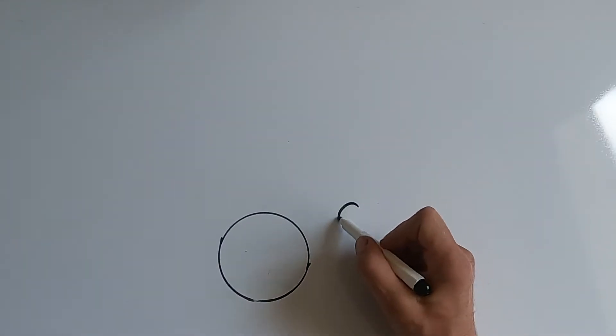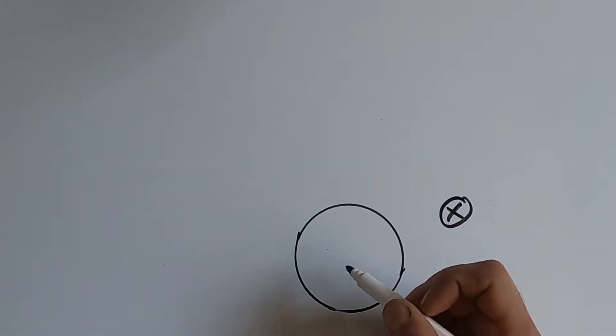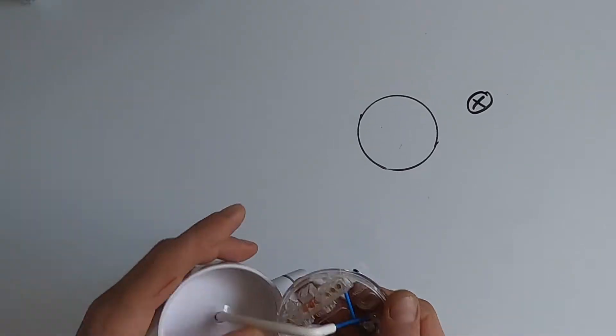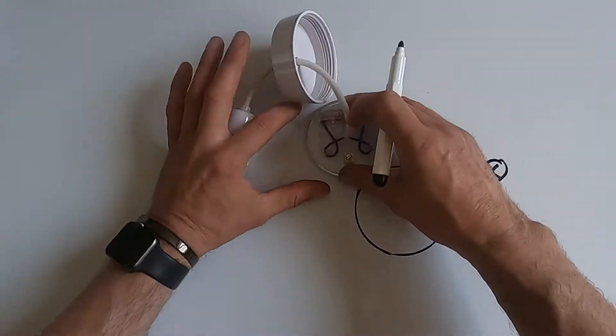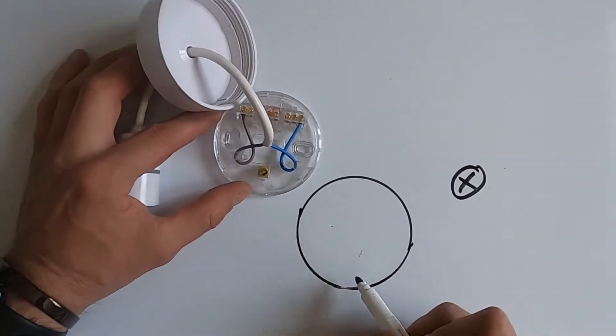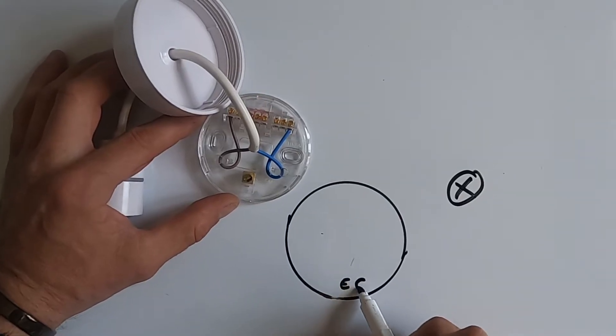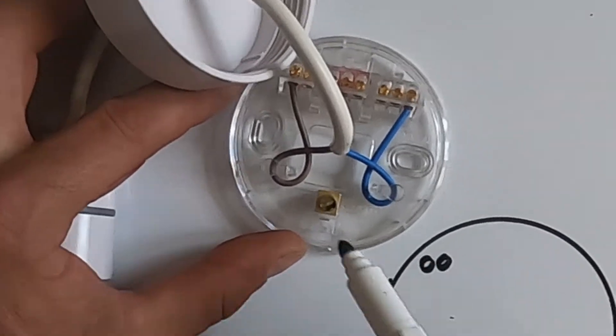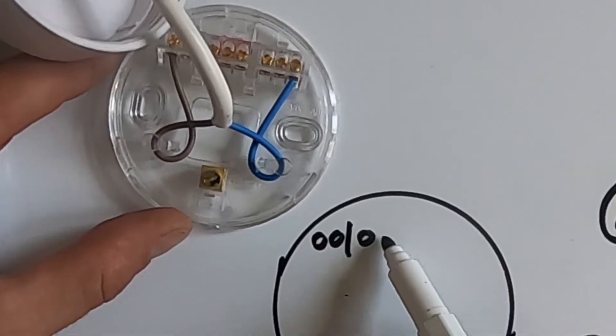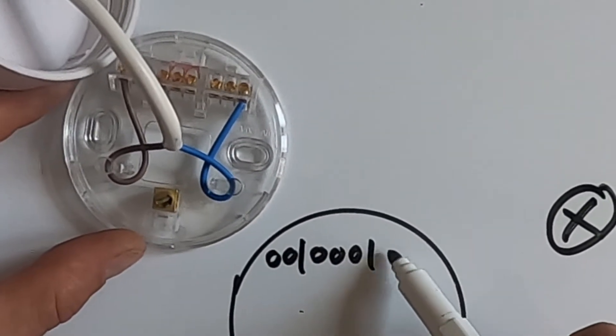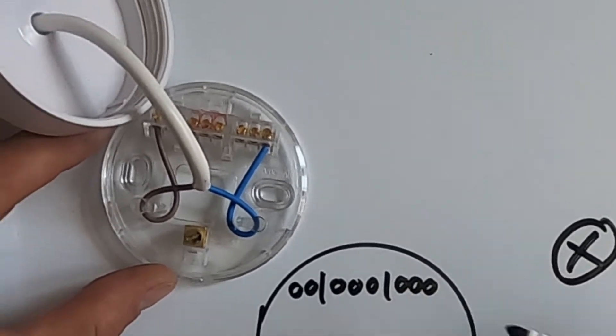And then the actual light. So if we look inside this ceiling rose, what we have is the earth there, we have two terminals, and then three terminals, and then another three terminals in there.